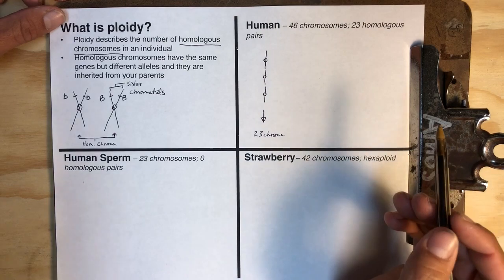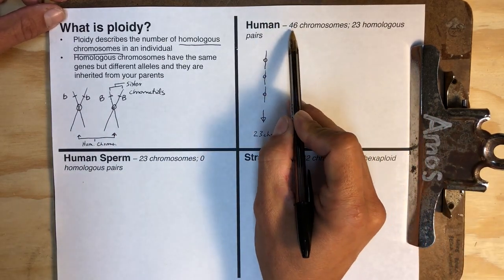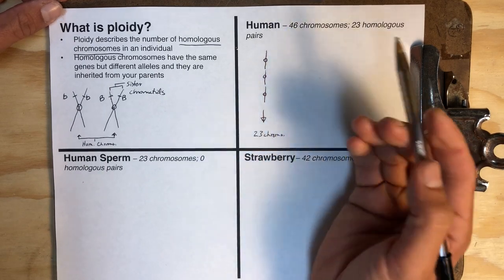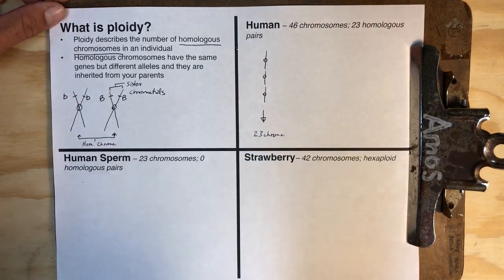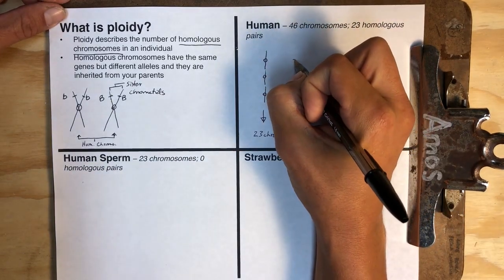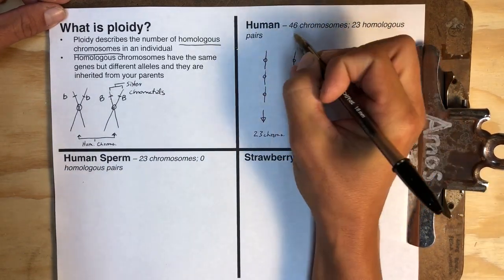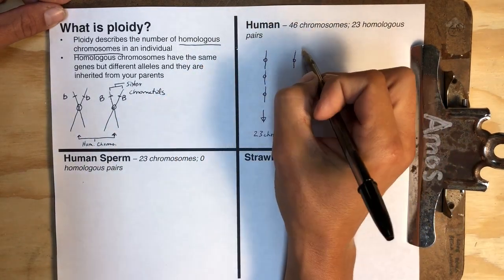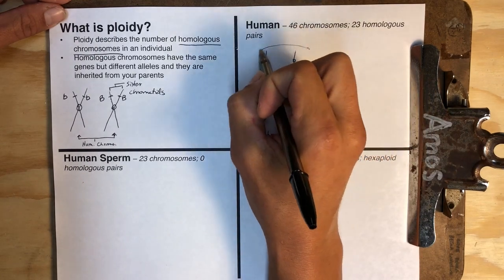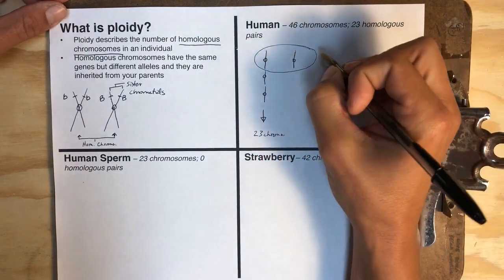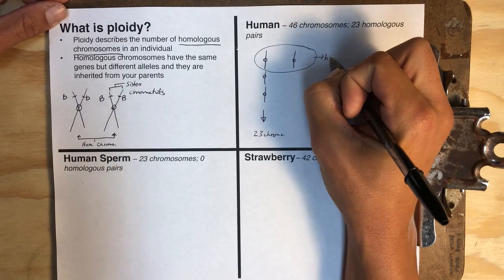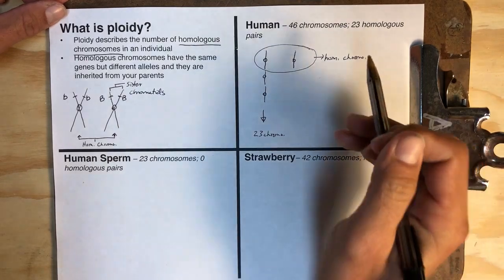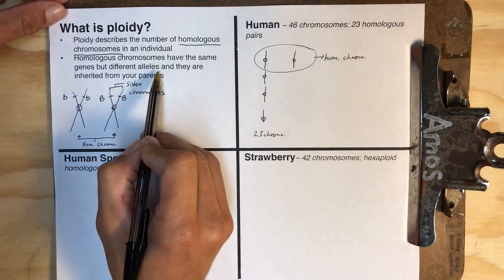If you want to know how many genes there are in a human being, you don't need to look at all 46 inside of your body — you really only need to look at 23, half of them. Once you get to chromosome number 24, it's going to be a homologue of one of those first 23. So if we were to line up all 46 chromosomes, there would be 23 homologous pairs, and that would mean they have the same genes but different alleles.